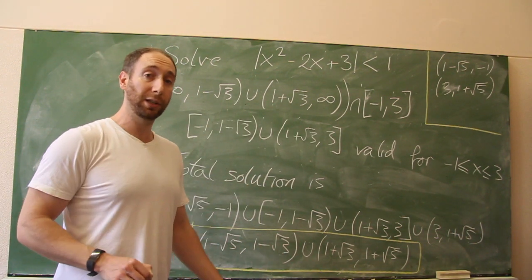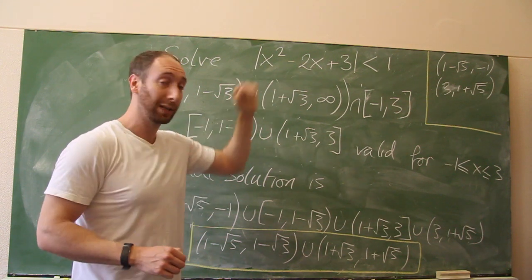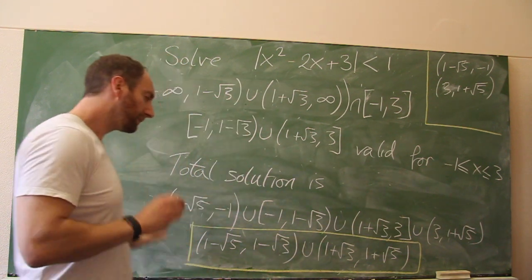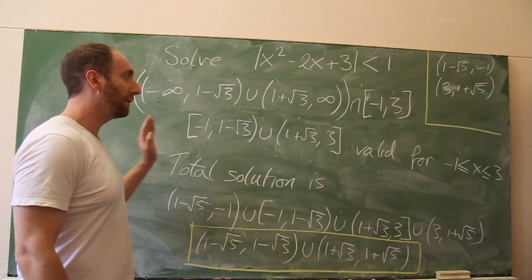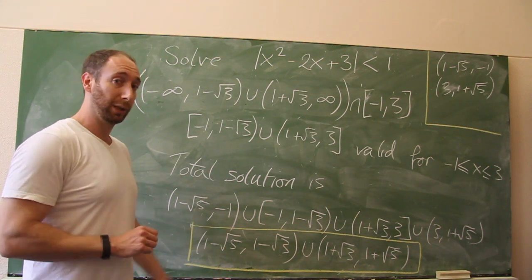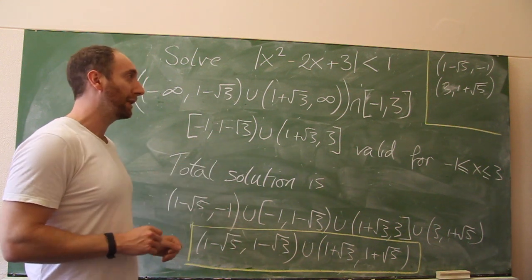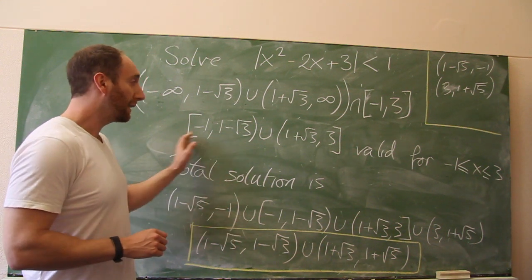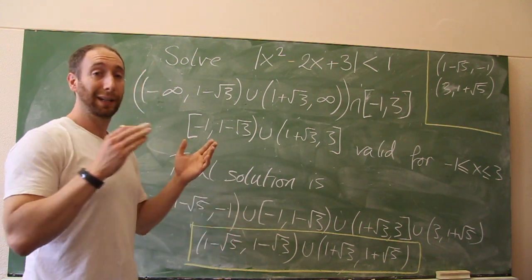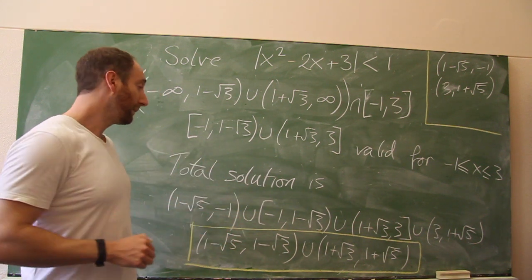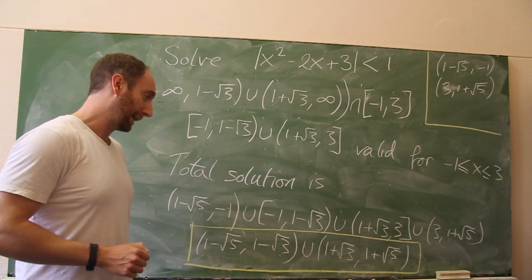I'm sure there are many other ways to solve this quadratic inequality with absolute values, but this is the one that makes the most intuitive sense. Try and work through it yourself using the same method and see if you get the same answers for all the quadratic equations and the unions and intersections. If you don't, let me know in the comments and we can see if we can figure it out.